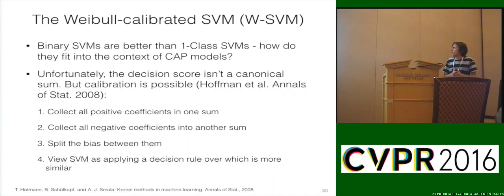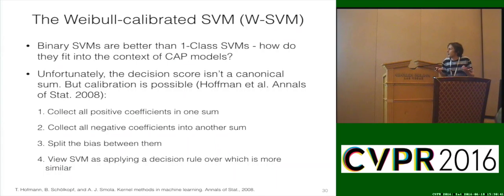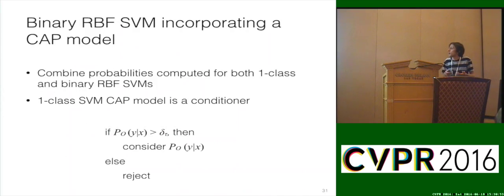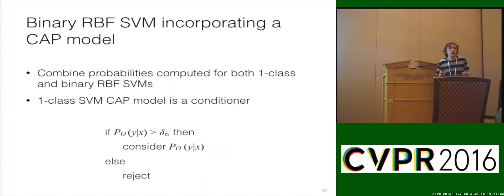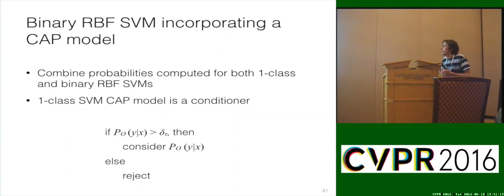The best algorithm we have right now for decision making is the WSVM, or Weibull-calibrated SVM — this is the one out of the toolkit I use most often. Binary SVMs are better than one-class SVMs, but how do they fit into the context of CAP models? The decision score isn't a canonical sum, but calibration is still possible: collect all positive coefficients into one sum, collect all negative coefficients into another, split the bias between them, and view the SVM as a decision rule over which is more similar.